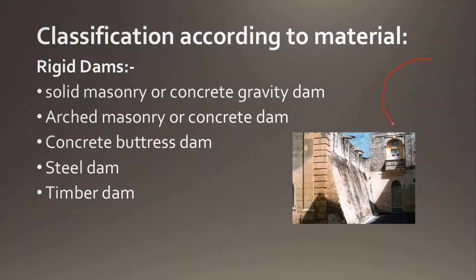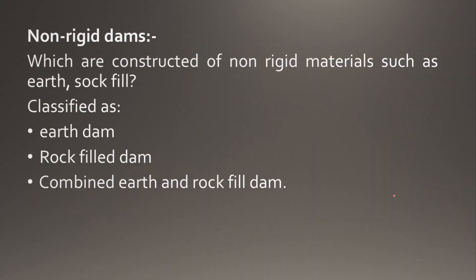An arched dam has an arched shape. A concrete buttress dam is one where concrete is filled at large heights of the structure. Next is steel dam, then timber dam — using wood mesh. Non-rigid dams are constructed of non-rigid materials such as earth and rockfill, classified as earth dam, rockfill dam, or combined earth and rockfill dam. In a rockfill dam, small rocks are filled within the dam structure.